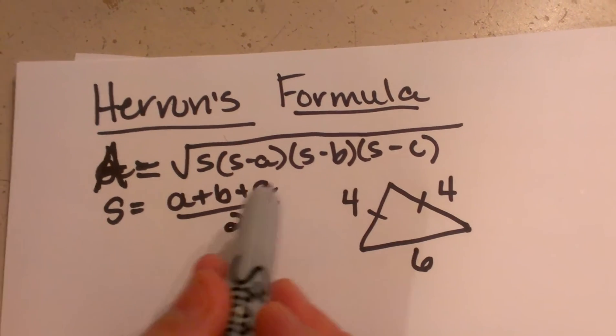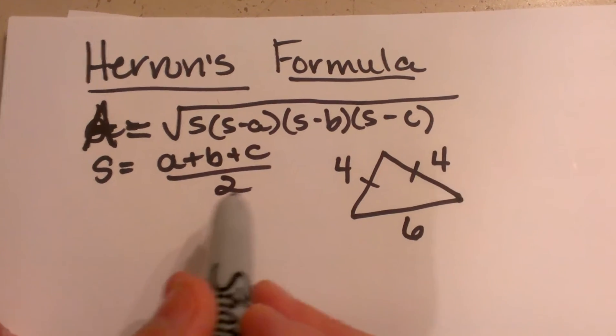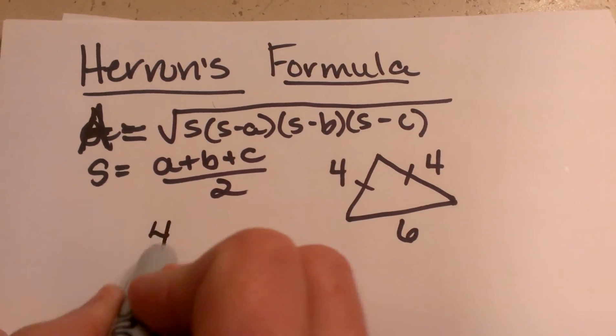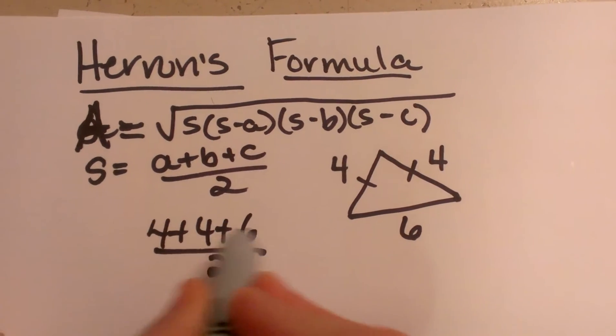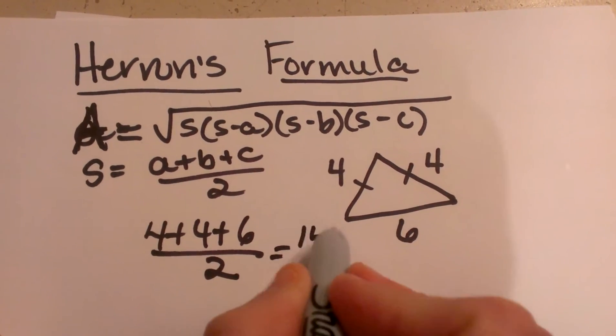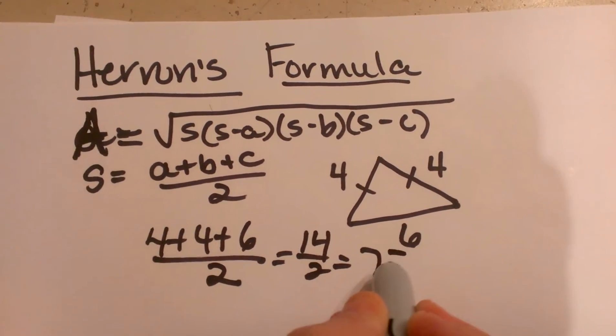To find S, you add the three sides up A, B, and C and divide by 2. So I'm going to take 4 plus 4 plus 6 and divide by 2. So that gives me 14 over 2 which is 7. So that's the value of S.